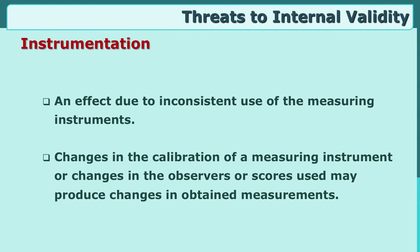Another threat is Instrumentation. For getting any score, we have to use some instrument — a test, interview schedule, observation schedule, or rating scale. Are these instruments faultless? Are there different interpretations of the same word? Is there a difference between two observers? These issues are related to instrumentation — faulty preparation, faulty use, or lack of inter-observer reliability. If two observers give two different results, the instrument is not reliable and therefore not valid, which threatens internal validity.